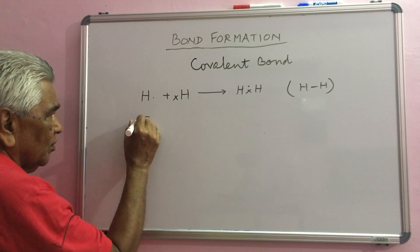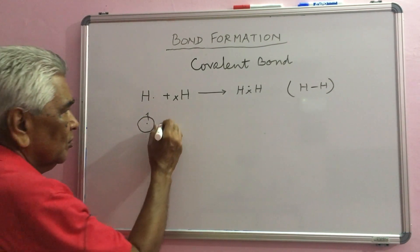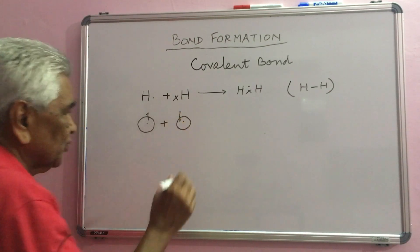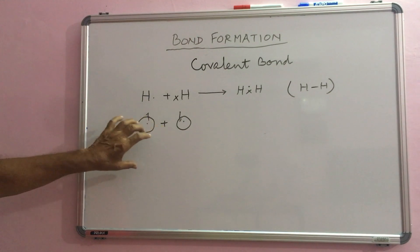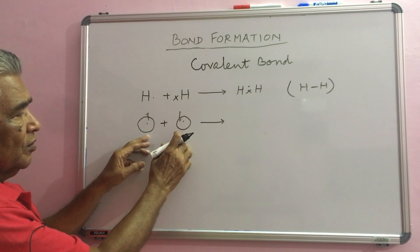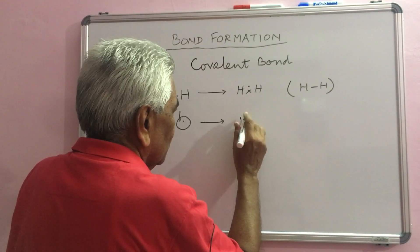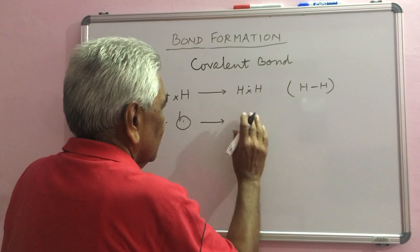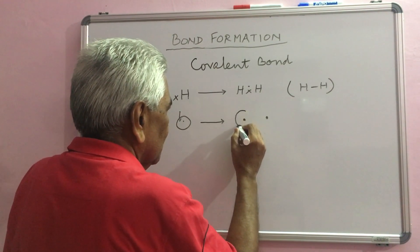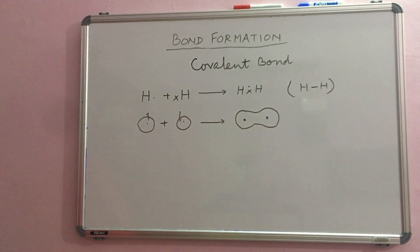Hydrogen has one S orbital and one electron in it, another hydrogen atom which must have opposite spin to combine with this. These atomic orbitals now overlap each other to form the molecule and the shape becomes this type.